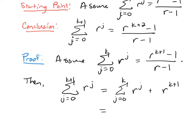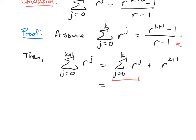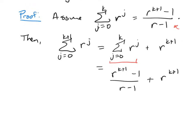And now, for this part right here, I can use my formula up here for that. This would be r to the k plus 1 minus 1 over r minus 1. And we want to get this down to having one term, so I'm going to get a common denominator.